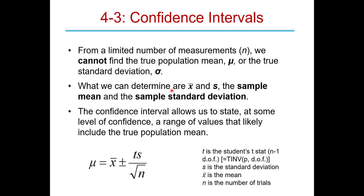Let's talk about how we use this t-statistic to calculate a confidence interval. When we measure a sample like our hydrochloric acid from lab, we can only do a limited number of measurements, so we can't find the true value. The true value would equal the true population mean, which would require an infinite number of measurements.